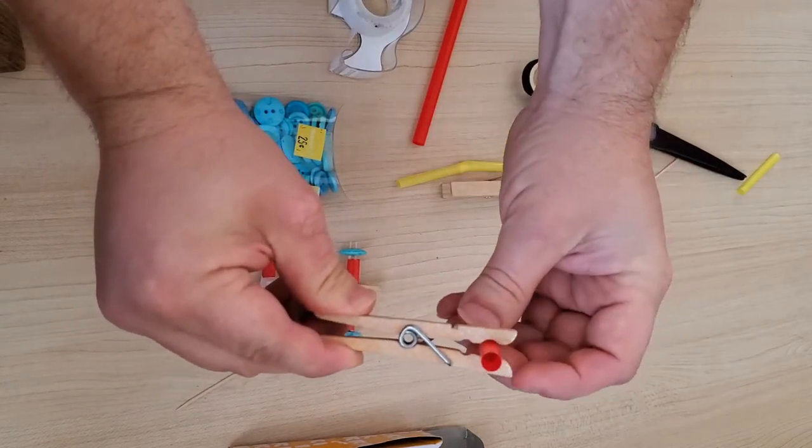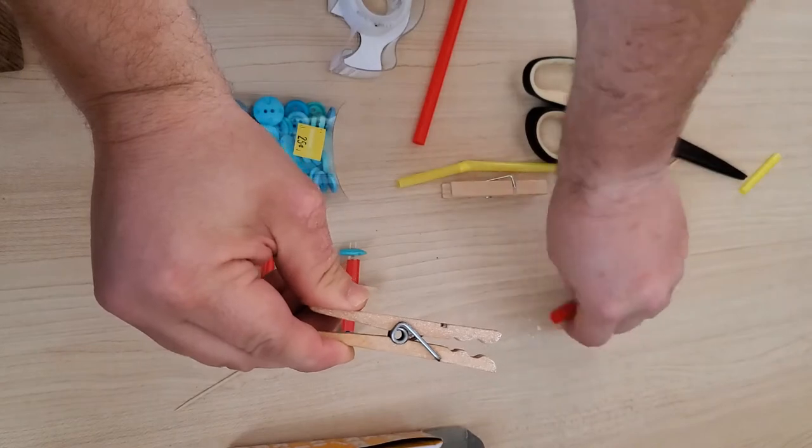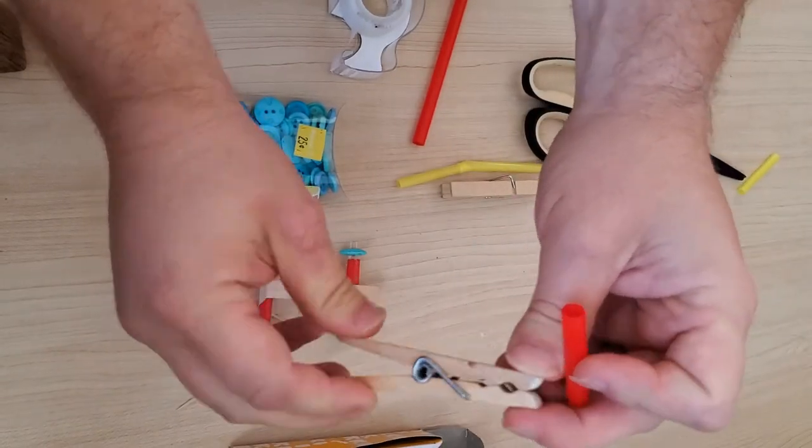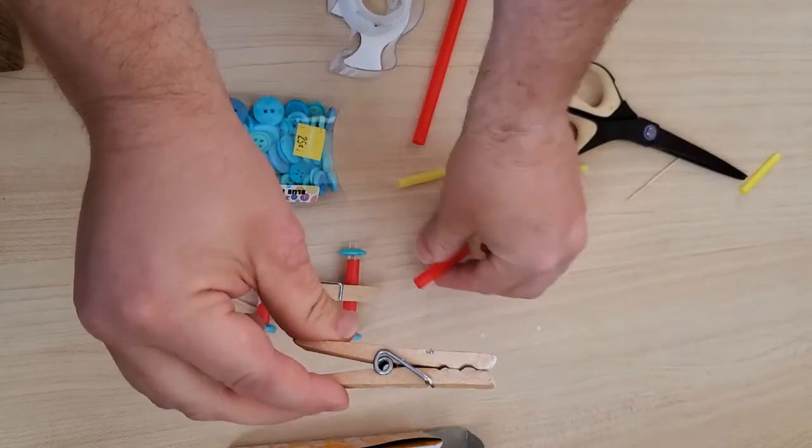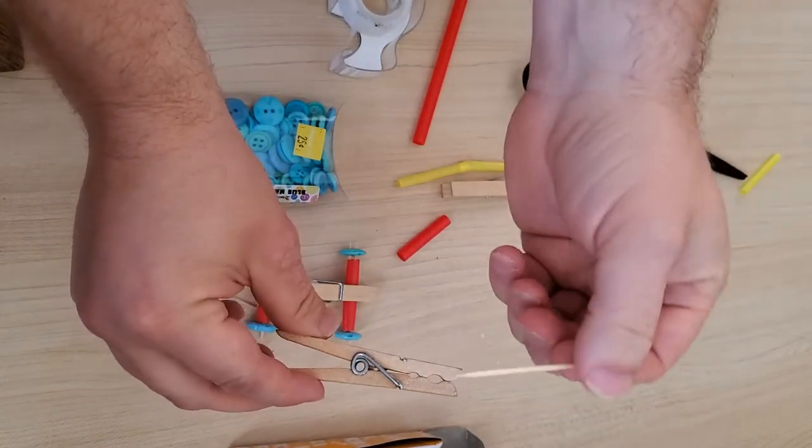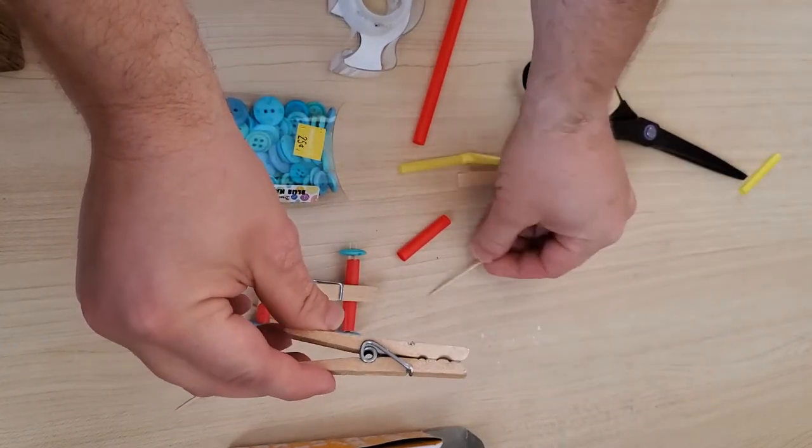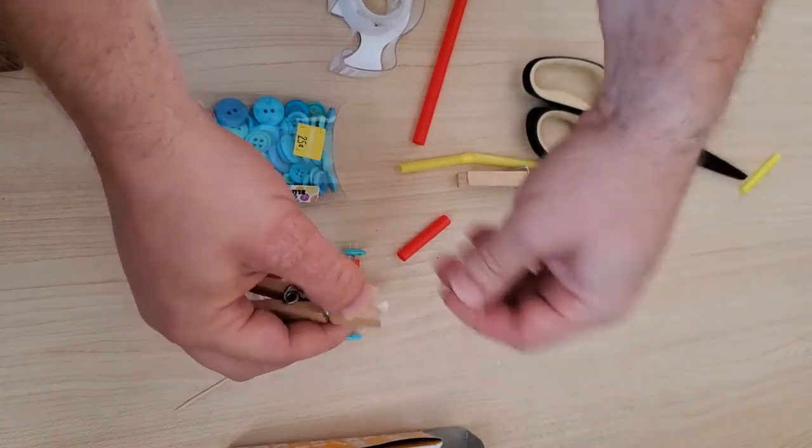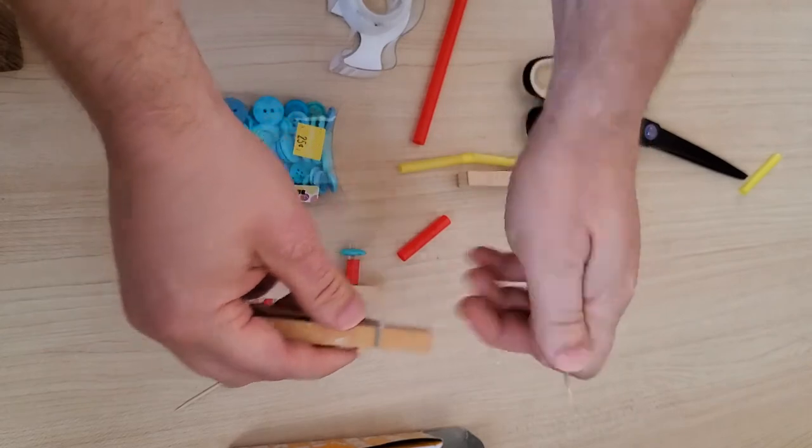So that the force with which this clothespin closes doesn't stop the toothpicks from spinning around, which the toothpicks are the axle. So if the axle can't spin around, then the wheel and axle doesn't work.